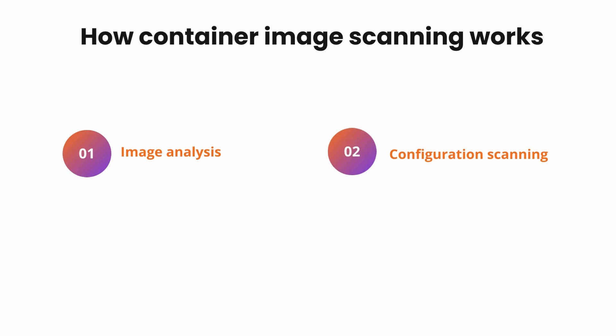The second step is configuration scanning. The scanning tool checks the image configuration against a set of best practices and compliance standards. If there is any kind of violation, it will let us know there is a misconfiguration in that container. The third step is vulnerability scanning, where the tool checks the image against a known vulnerability database and identifies any vulnerabilities existing in your image.